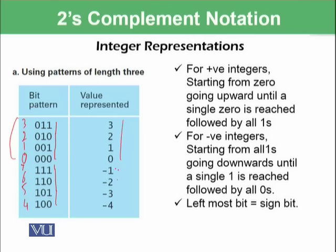The rule is for positive integers starting from 0 going upward until a single 0 is reached followed by all 1s. And for negative numbers starting from 1 going downward until we have only 1, 1 followed by all 0s.